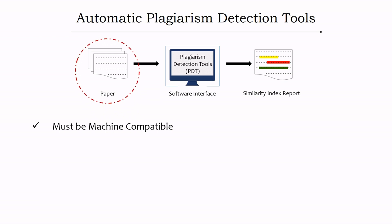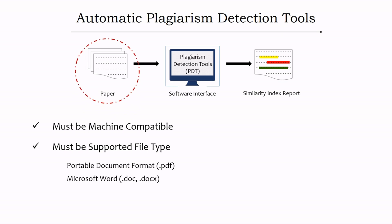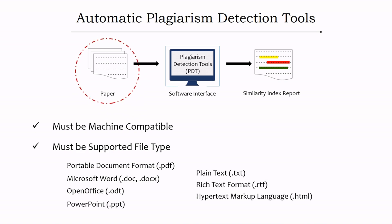The second criterion is that the paper must be in a supported file format. Most plagiarism detection tools accept a variety of formats such as PDF, Microsoft Word documents, Open Office documents, PowerPoint files, plain text files, rich text format files, and HTML files. Some tools may extend support to other formats, but these are globally supported. Both criteria must be fulfilled.